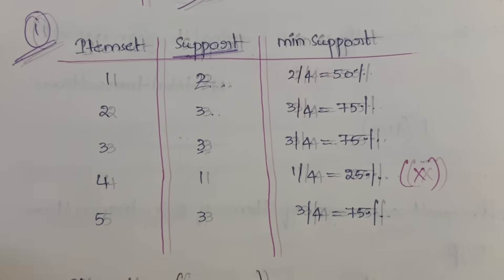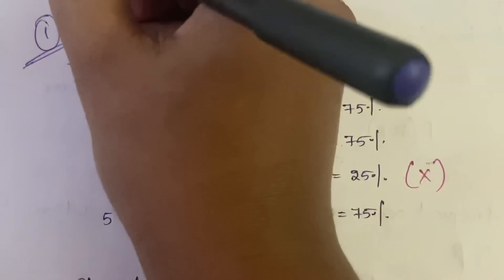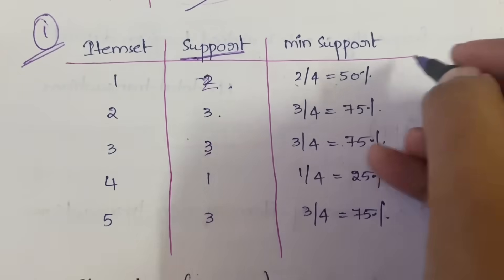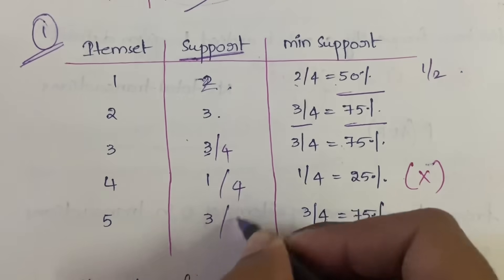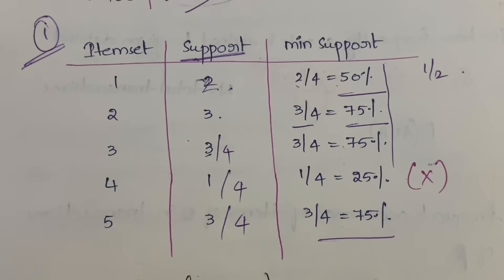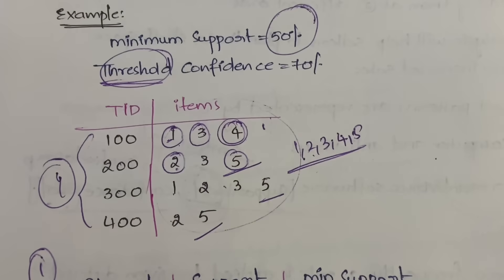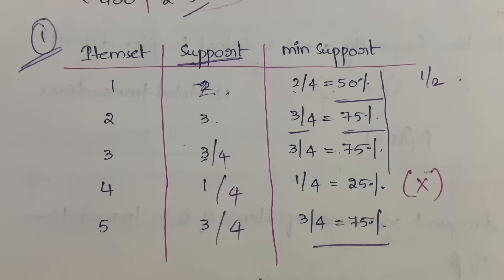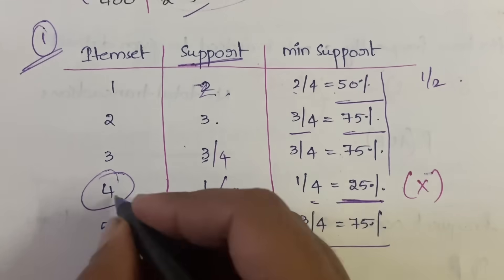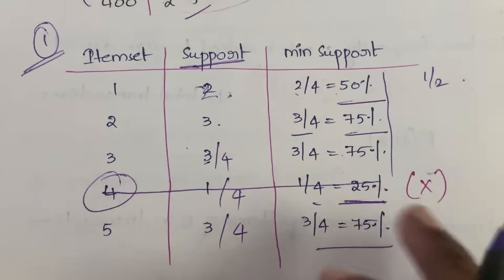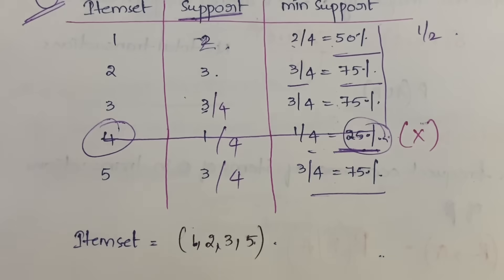Now we calculate the minimum support percentage by dividing each item's support by the total number of transactions, which is 4. So: item 1 → 2/4 = 50%; item 2 → 3/4 = 75%; item 3 → 3/4 = 75%; item 4 → 1/4 = 25%; item 5 → 3/4 = 75%. Since our minimum support threshold is 50%, item 4 (25%) is eliminated. The new item set is {1, 2, 3, 5}.